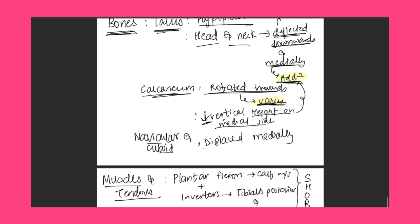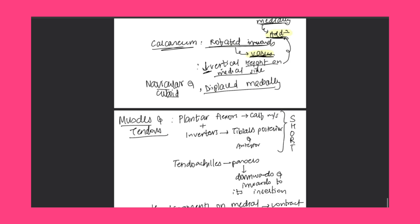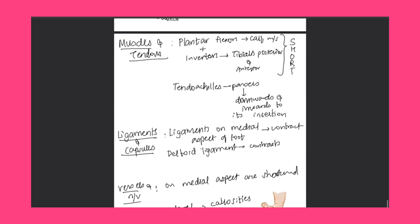To summarize bony changes: talus is hypoplastic, head and neck of talus deflected downwards and medially, calcaneum rotated inwards with decreased vertical height on the medial side, and navicular and cuboid are displaced medially. Coming to soft tissue changes — muscles and tendons: the plantar flexors (calf muscles) and inverters (tibialis posterior and anterior) are shortened, leading to deformity in CTEV.